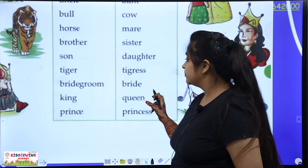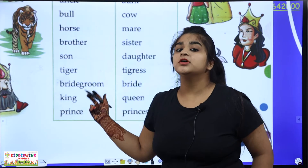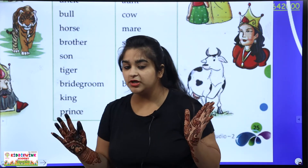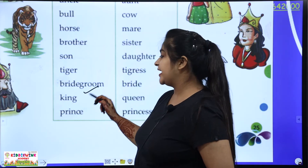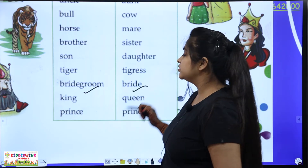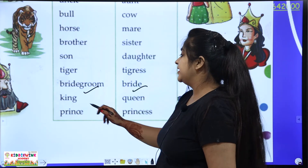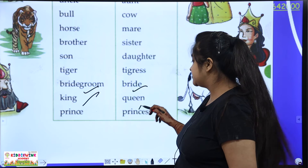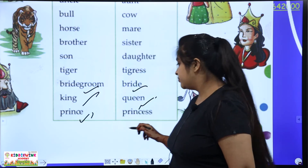Bridegroom and bride. When you are married, they are dhula and dhulan. So dhula in English is bridegroom, and dhulan is bride. Then king and queen. Prince and princess.